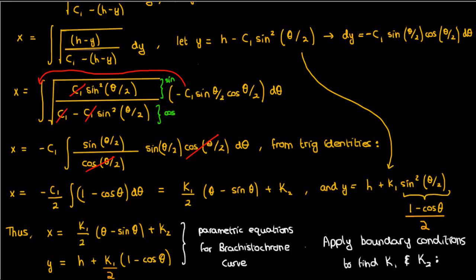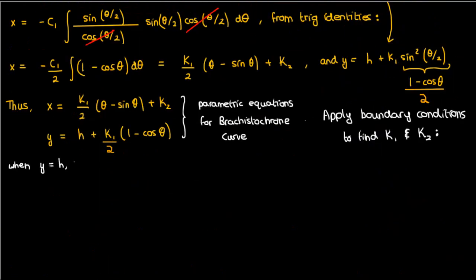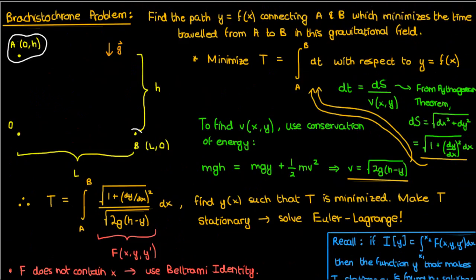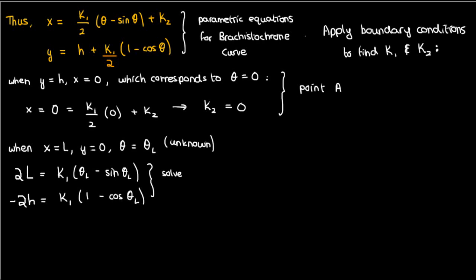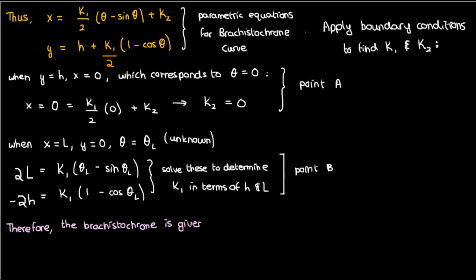Let's now apply our boundary condition starting with point A. We know that when y equals h, x equals 0, and this corresponds to the parameter theta equals 0. And at theta equals 0, x is 0, which means that k2 is also 0. For the second boundary condition for point B, we know that at x equals L, y is 0. We don't exactly know which theta this corresponds to a priori, so I'll label that unknown theta as theta sub L. In this case we end up with a system of two non-linear equations involving k1 and theta L. It's rather difficult to solve them analytically, but if you're interested in coming up with a numerical solution, I encourage you to go right ahead. The end result is that you'll get k1 in terms of the known constants h and L.